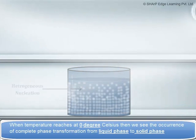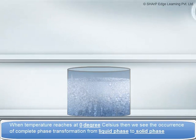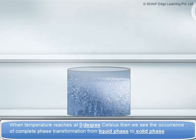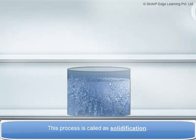When temperature reaches zero degrees Celsius, we see the occurrence of complete phase transformation from liquid phase to solid phase. This process is called solidification.